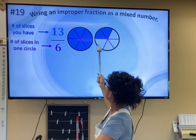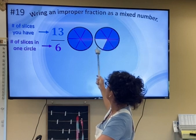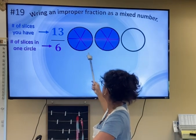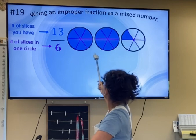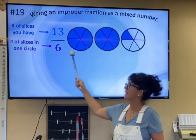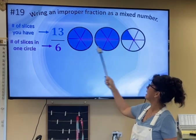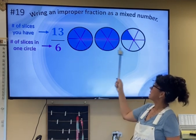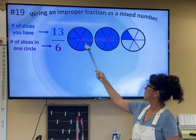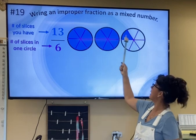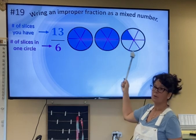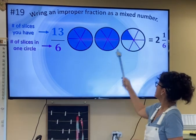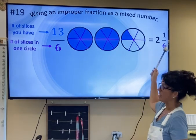Continuing: 7, 8, 9, 10, 11, 12. We still have too many slices, so we add another circle — 13. Notice every single circle has six slices in it. Now when we step away and take a look at it, we have two full circles and then one piece out of six. So as a mixed number, this is 2 and 1/6.